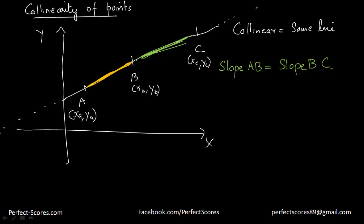Then the slope of this line would be equal to the slope of this line. So what's the slope? If we use the slope formula, the slope of line AB is going to be (Y_B - Y_A)/(X_B - X_A).